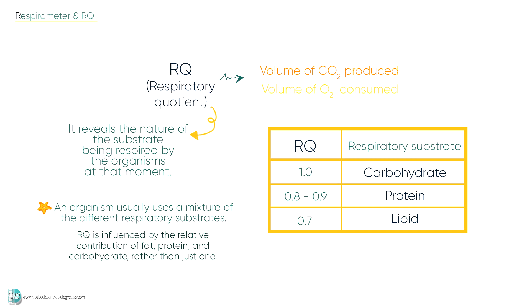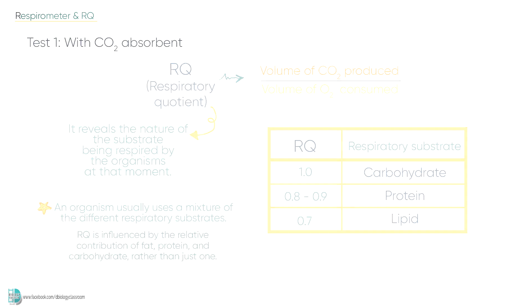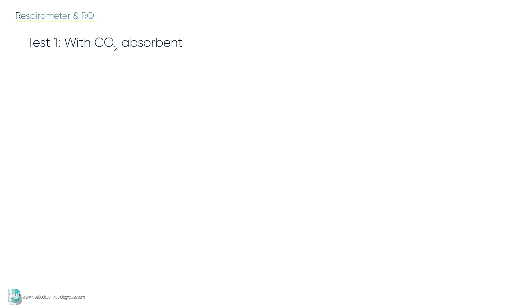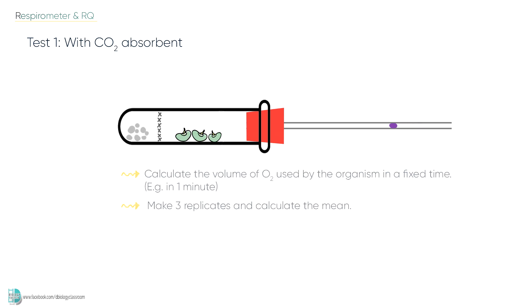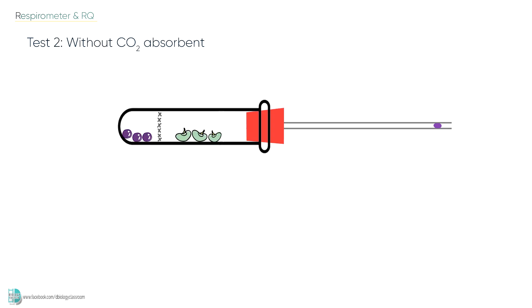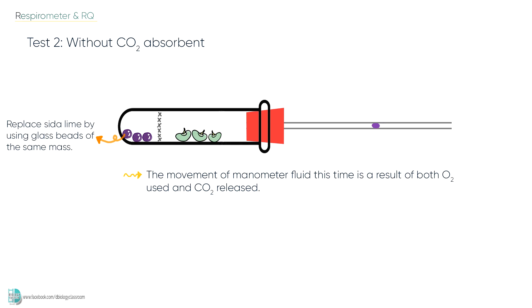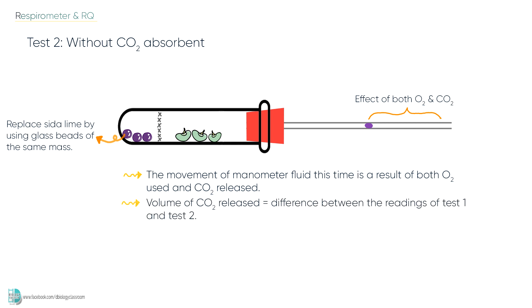Now let's see how we can use a respirometer to determine RQ. Firstly, run the experiment as mentioned in the first part of this video to find out the volume of oxygen used by the organism in a fixed time, for example in 1 minute. Make 3 replicates and calculate the mean value. Then repeat the experiment, but this time replace the soda lime with an inert substance such as glass beads. The reading of this second experiment is a result of both oxygen use and carbon dioxide release. Find the difference between the first and second test, which indicates the volume of carbon dioxide produced.